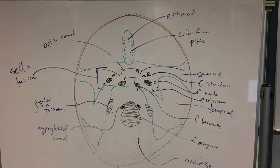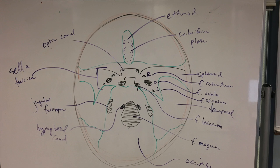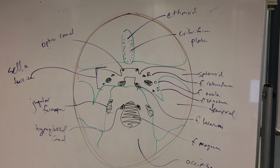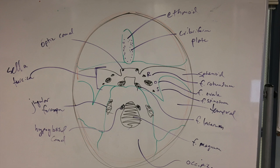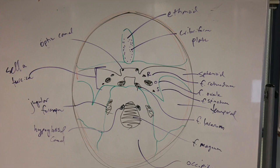We've got a series of foramen flanking the sella turcica. To remember them, use ROS — like Ross. The R is the foramen rotundum, closest to the optic canal. The O is a little bigger and looks like an oval — that's the foramen ovale. And the S is the foramen spinosum.